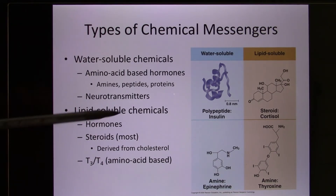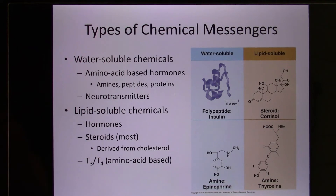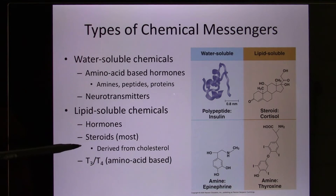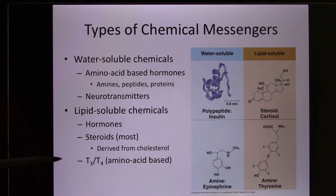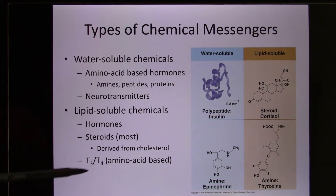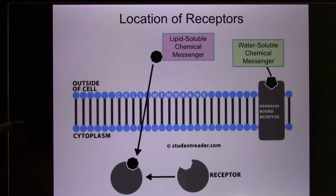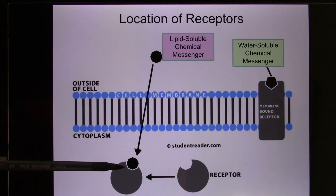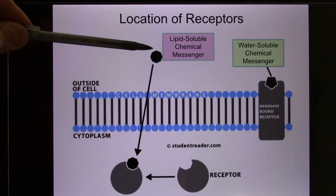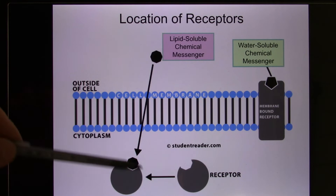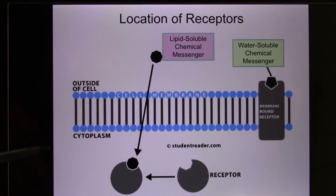Lipid-soluble messengers include most hormones, except steroid hormones — wait, steroid hormones are made of steroids, which are lipid, so they are lipid-soluble. The thyroid hormones T3 and T4, released from the thyroid gland, are also lipid-soluble. If a molecule is lipid-soluble, it has no problem going through the cell membrane by simple diffusion, from high to low concentration. So their receptors are placed inside the cell — we call these intracellular receptors.